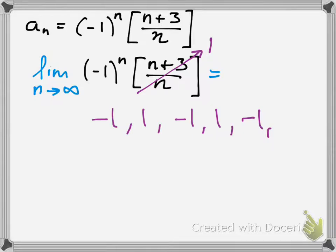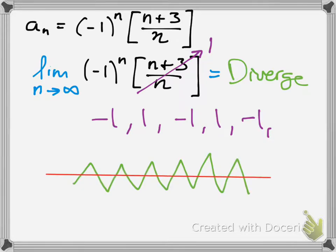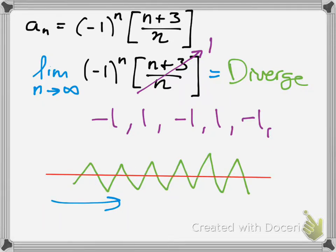The answer is diverge, because you're going to keep going up and down repeatedly. If you have a line going through here and you're taking the limit in this direction, it's never going to converge at one place — it's always going to keep bouncing to infinity. So that's the answer for that one.